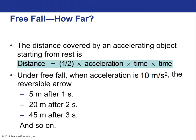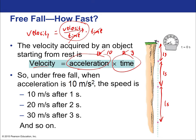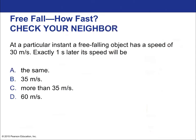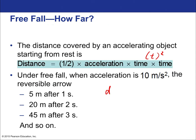The distance covered by an accelerating object starting from rest is: d = ½ × a × t². Under free fall with acceleration of 10 m/s², an object covers 5 meters after 1 second, 20 meters after 2 seconds, and 45 meters after 3 seconds — growth that is non-steady, covering significantly more ground each successive second.